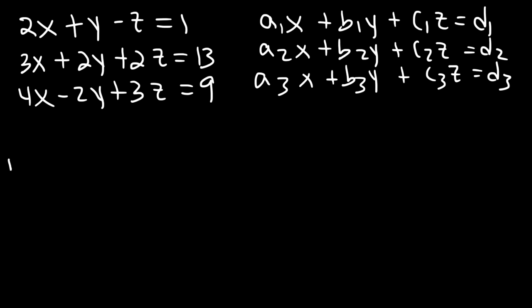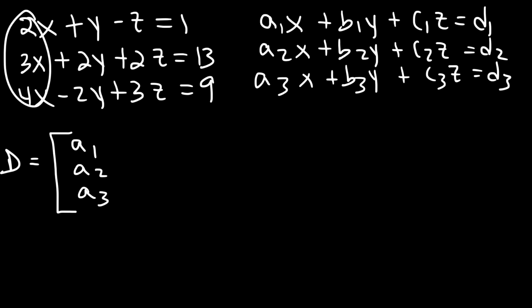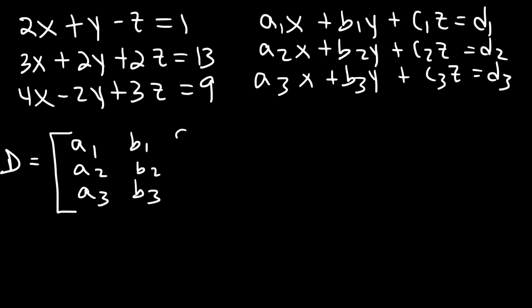So let's start with d. d is going to be a 3 by 3 determinant. The elements in this matrix are going to be a1, a2, a3 — those are the coefficients for the x variables — and then b1, b2, b3 — those are the coefficients for the y variables — and then c1, c2, c3. So you need to know how to evaluate a 3 by 3 determinant.